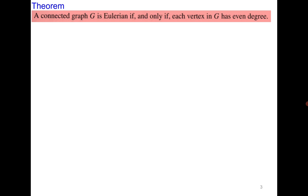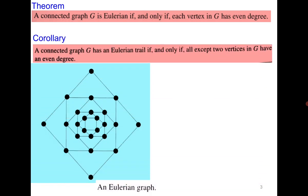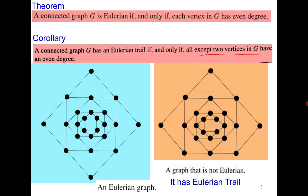We established the result which says that a connected graph is Eulerian if and only if every vertex has even degree. If all vertices have even degree the graph is Eulerian; if exactly two vertices have odd degree then the graph has an Eulerian trail but is not Eulerian.